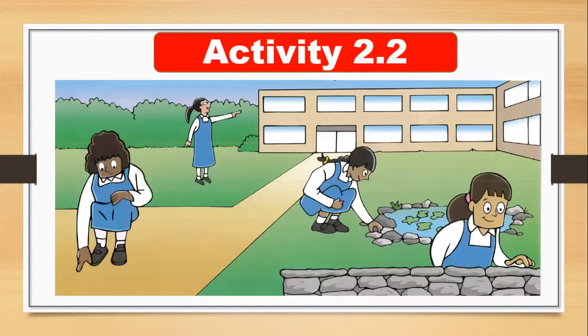This is Activity 2.2. You have to look around and try to find different types of rocks. Maybe you can find different rocks in different colors, different sizes, and different shapes. Maybe some rocks are large and some are very small. Some rocks may be smooth and some rocks may be rough. Look around in your city and try to find rocks.